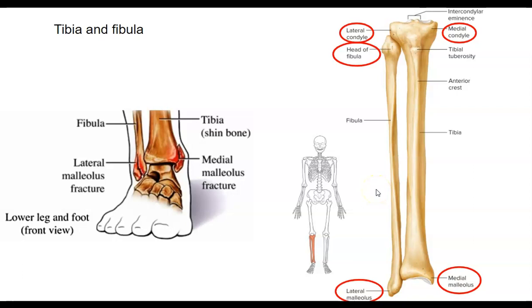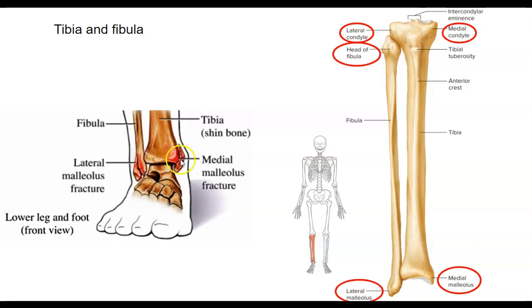Now we're looking at the distal extremity of the lower limb — the tibia and fibula. On the tibia, I'd like you to know the lateral condyle and the medial condyle, and also at the distal end, the medial malleolus. On the fibula, I want you to identify the head and then distinguish that from the lateral malleolus. The medial malleolus is on the tibia and the lateral malleolus is on the fibula.